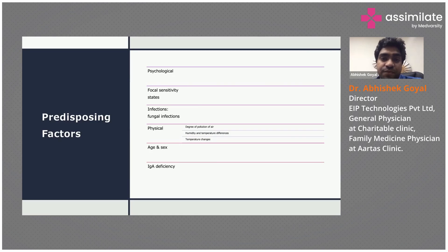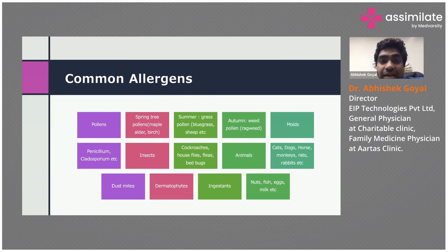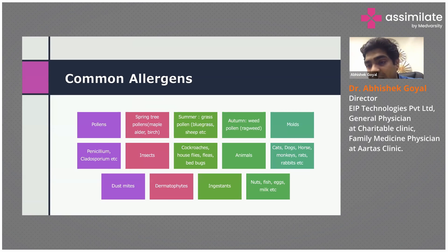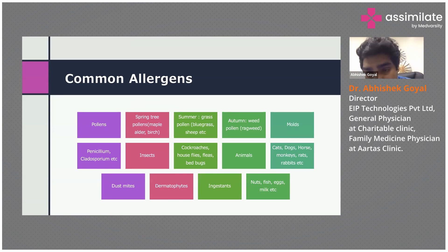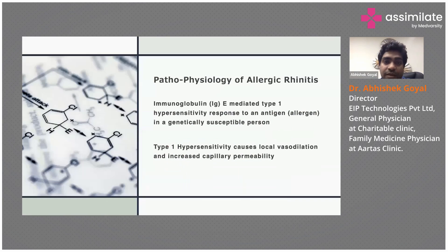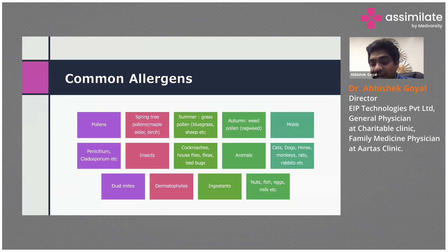Common allergens include pollens — spring tree pollens, summer grass pollens, autumn weed pollens — molds such as penicillium, insects like cockroaches and house flies, animal furs from cats, dogs, horses, monkeys, rats, and rabbits, as well as dust mites and dermatophytes. Ingested allergens include nuts, fish, eggs, and milk. This list can never be complete because allergy can be caused by anything.